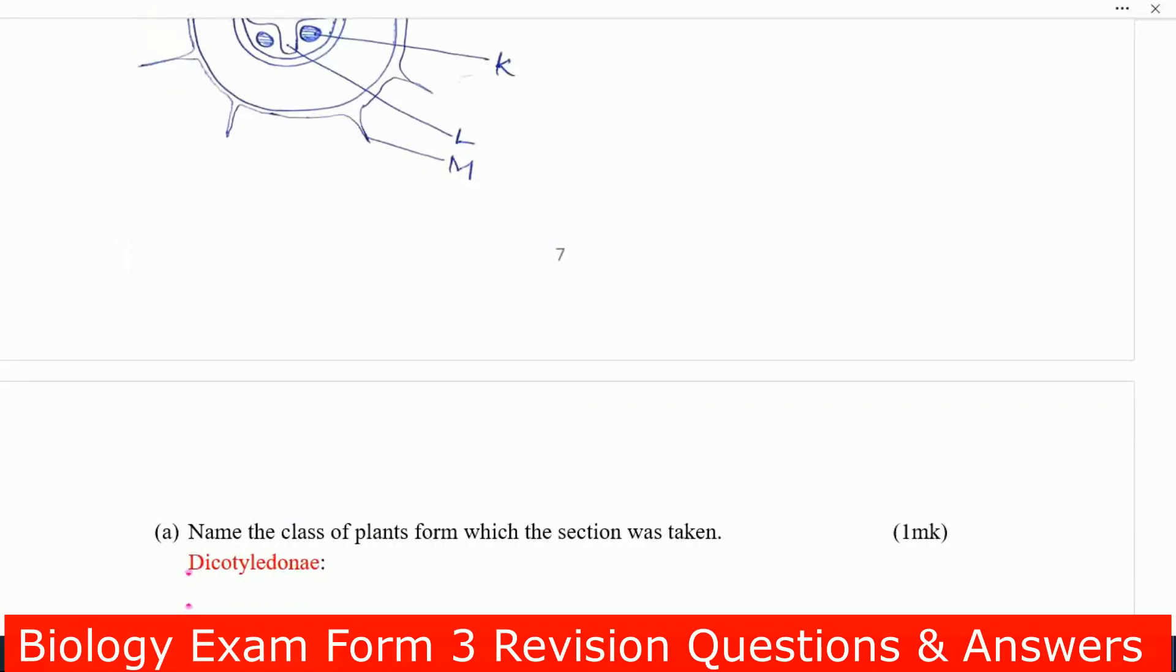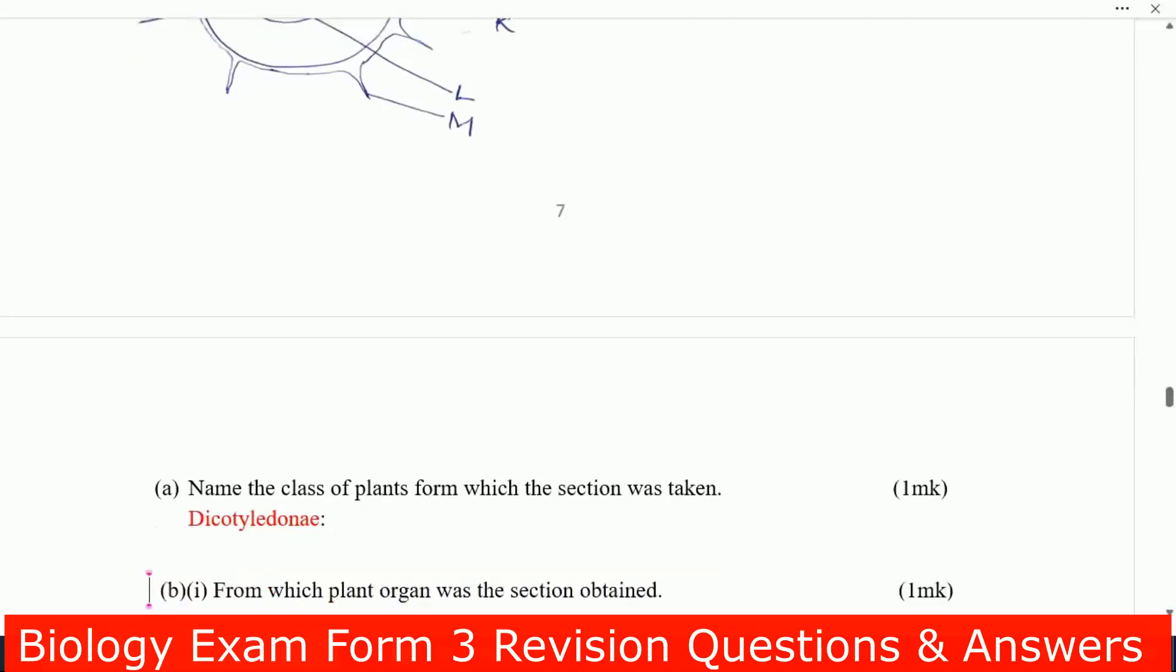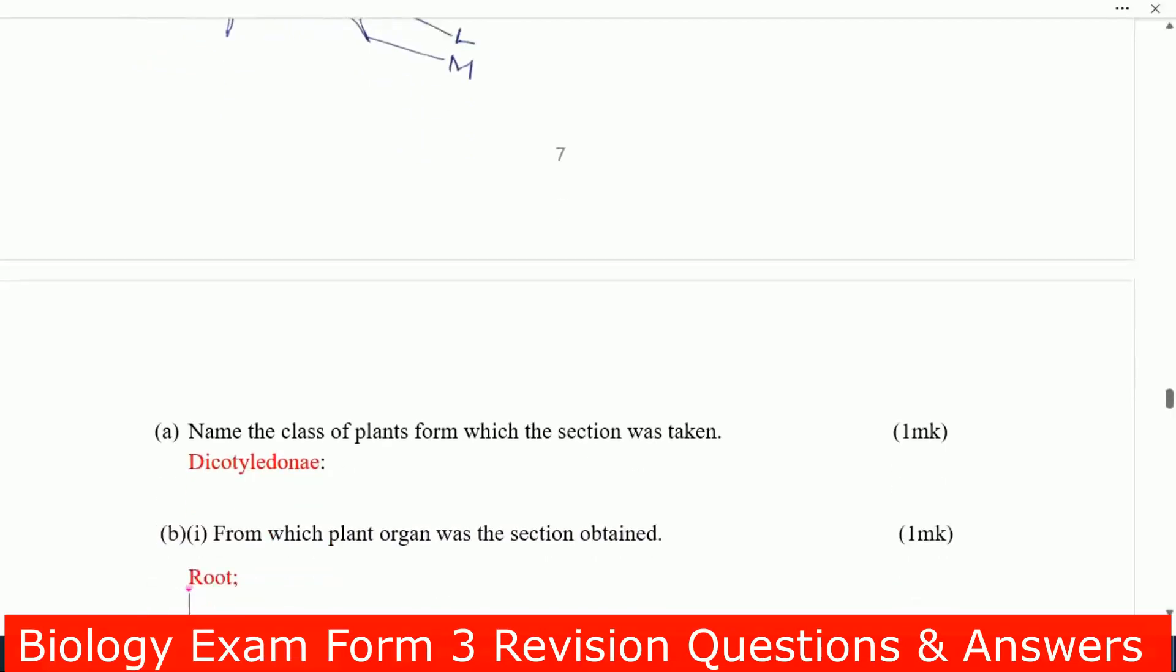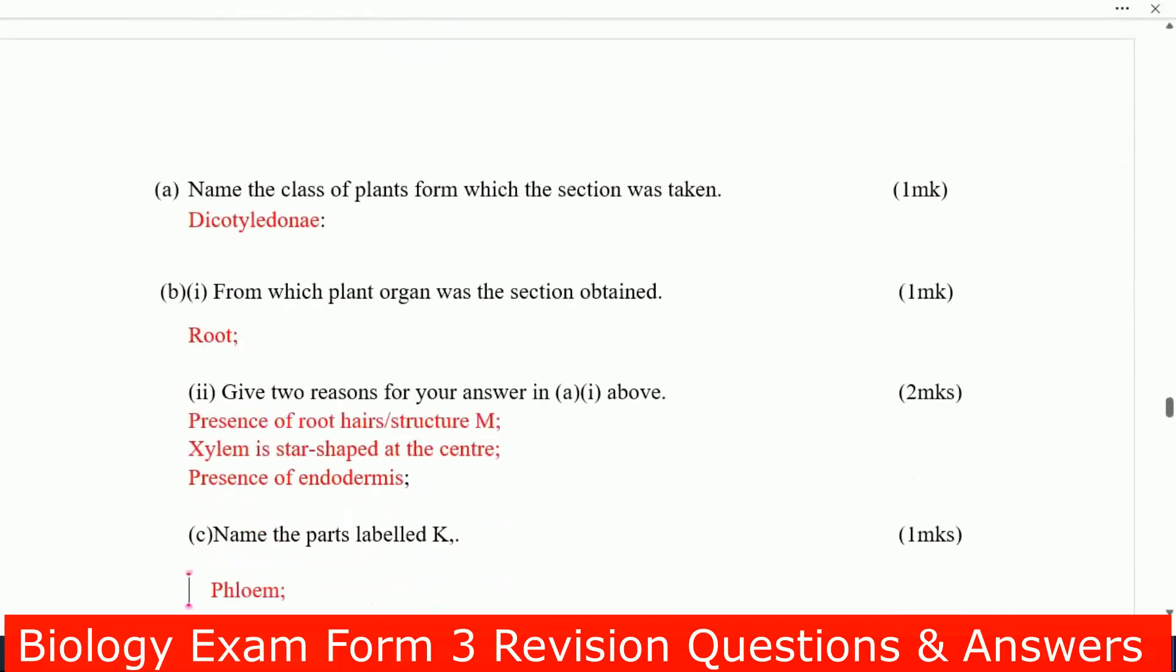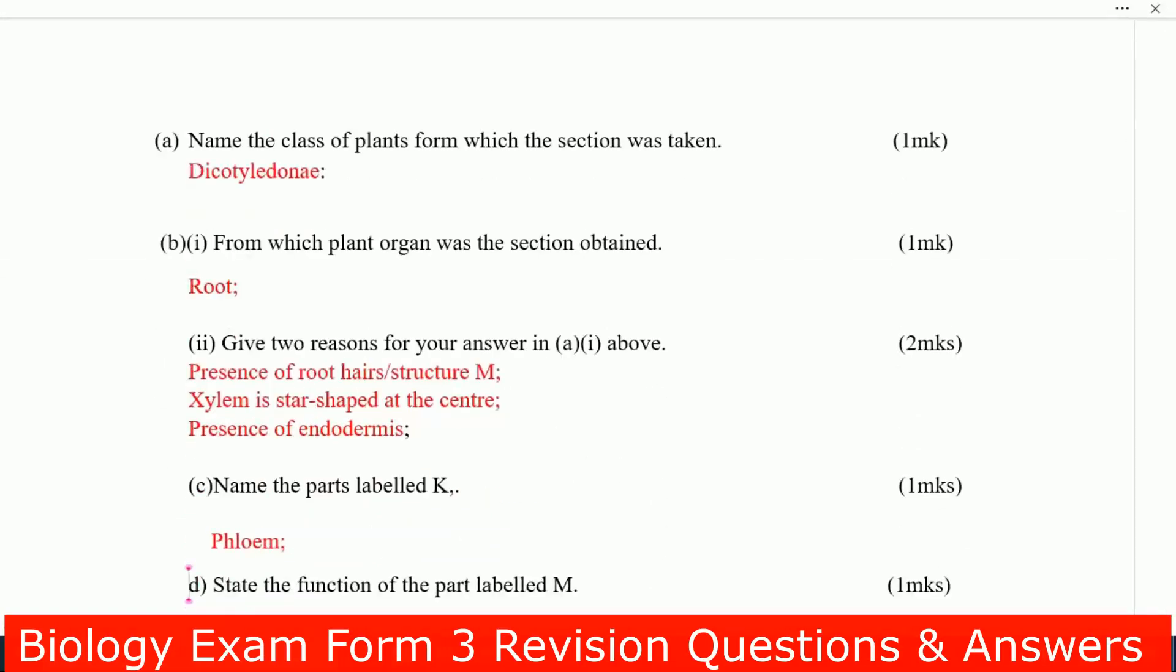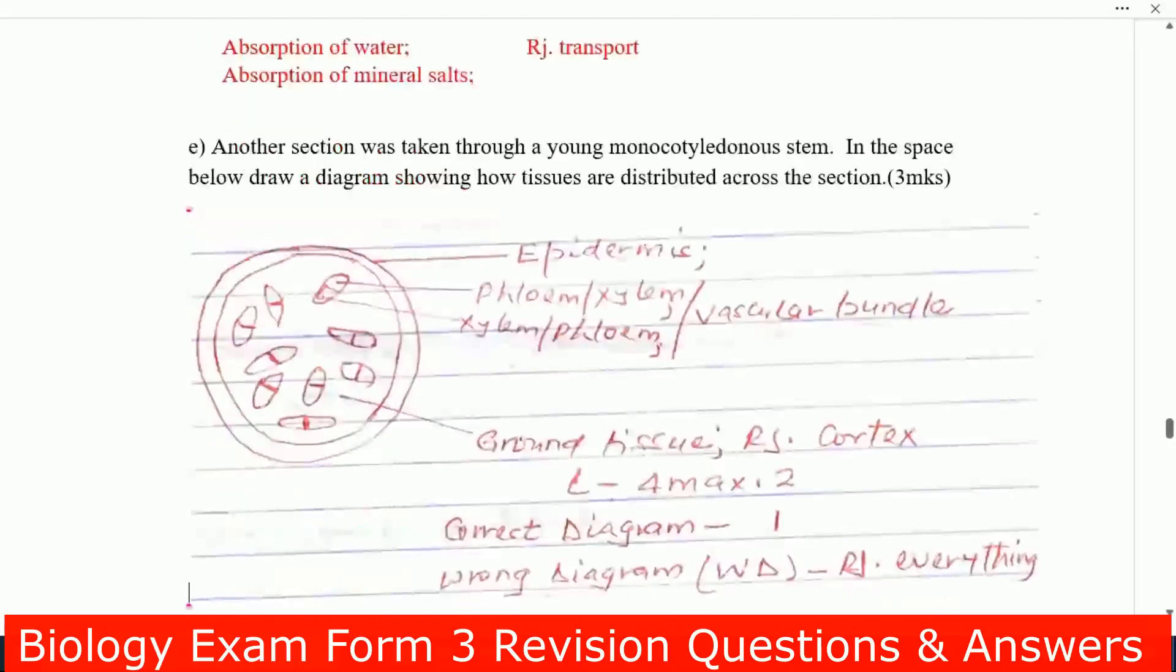Look at the questions. You have to name the class of plant from which the section was taken, that one is dicotyledon. From which part organ was the section obtained? That one is root. Give two reasons for your answer. Presence of root hair structure M, xylem is star-shaped at the center, presence of endodermis.